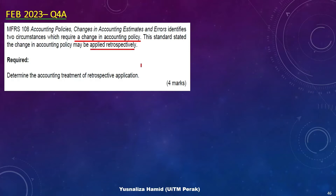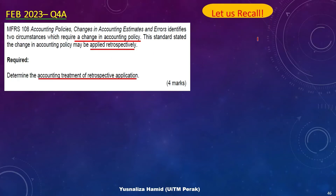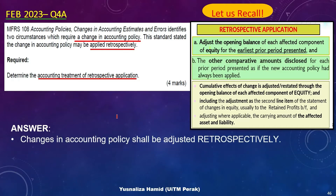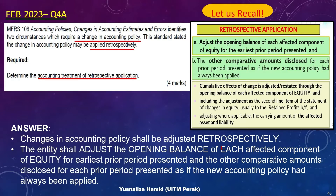The change in accounting policy is applied retrospectively. So what are the accounting treatments? Under MFRS 108, changes in accounting policy shall be adjusted retrospectively and therefore the entity shall adjust the opening balance of each affected component of equity for the earliest prior period presented. The second point is that the other comparative amounts disclosed for each prior period presented shall be adjusted as if the new accounting policy has always been applied.